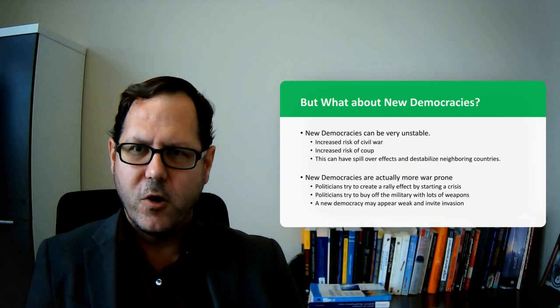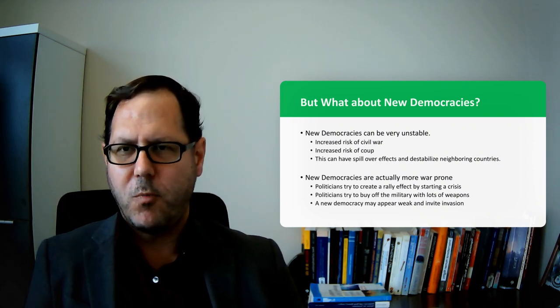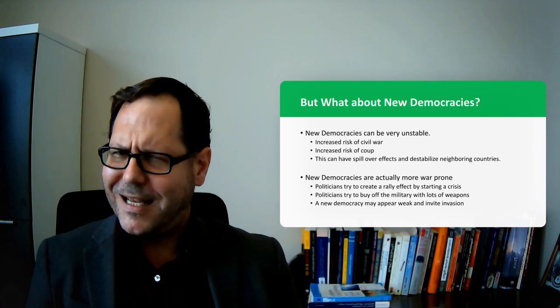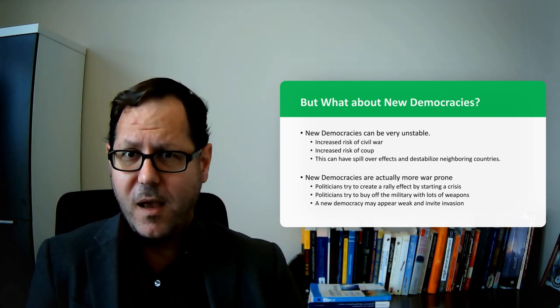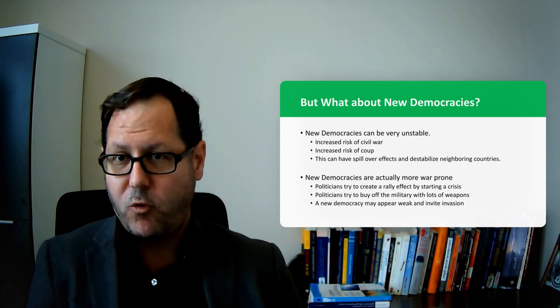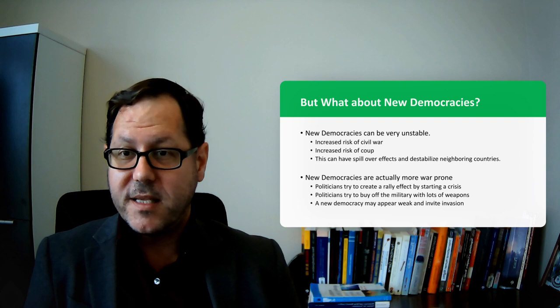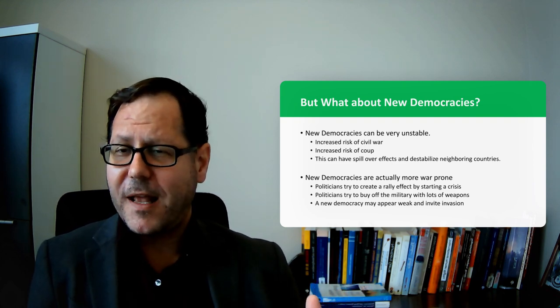A number of those states that emerged as democracies also had territorial disputes with their neighbors, borders that they disagreed with. And so it's a little bit difficult to disentangle. Is it because you were a new democracy or because we had just drawn the borders of these new states and got them wrong or got them in ways that were contested? So I'm not 100% sure that that's true, but it's certainly a carve out that we have in our discussion of Democratic Peace.